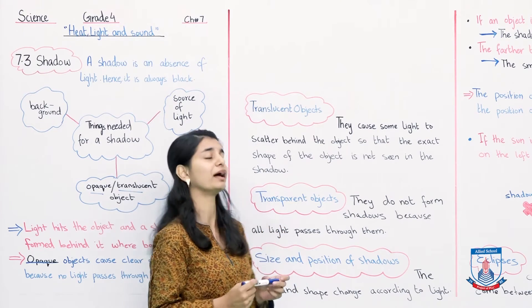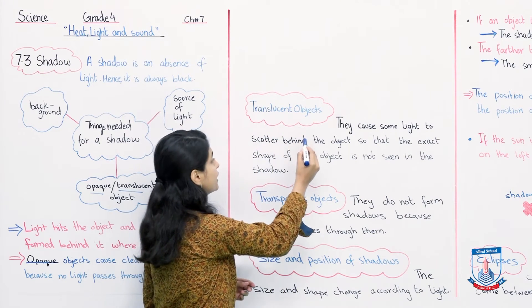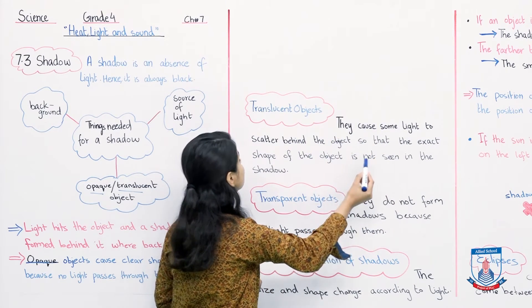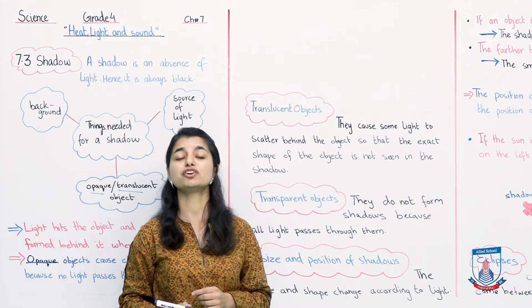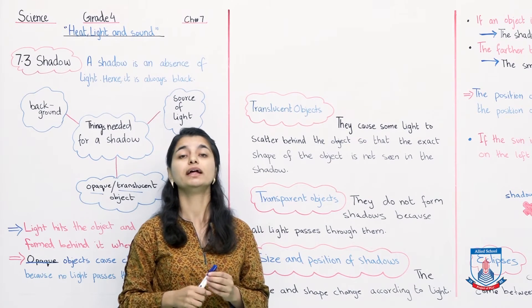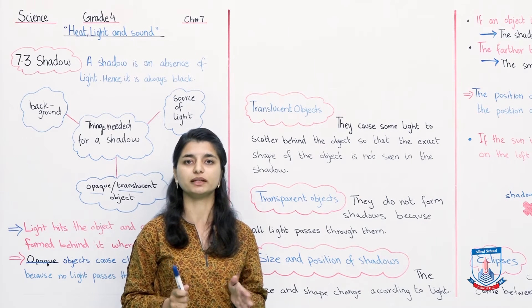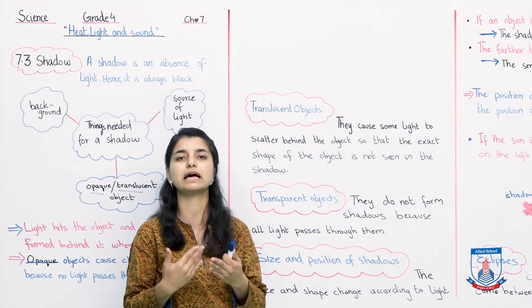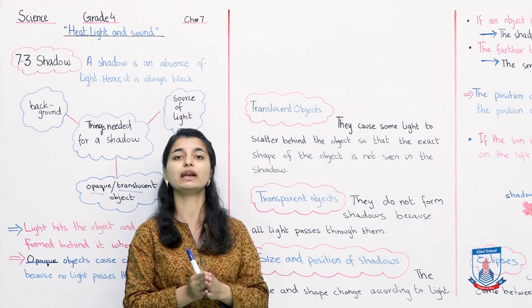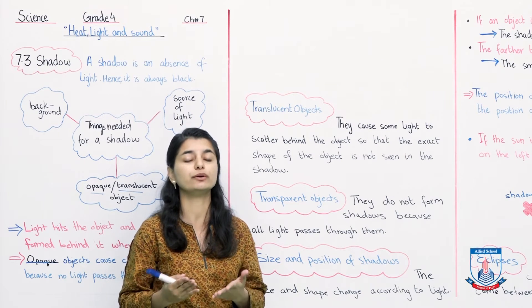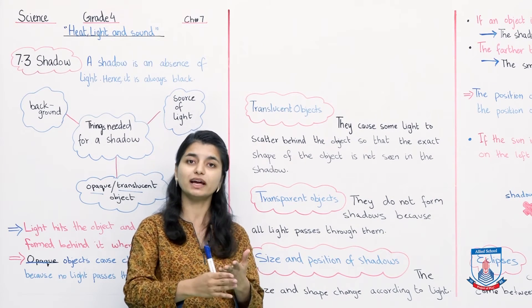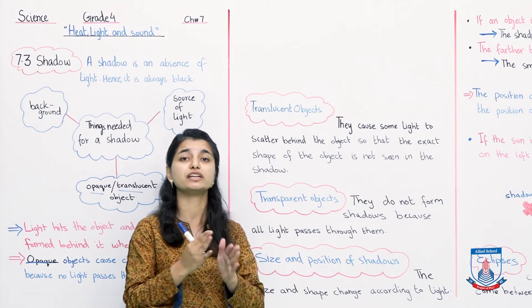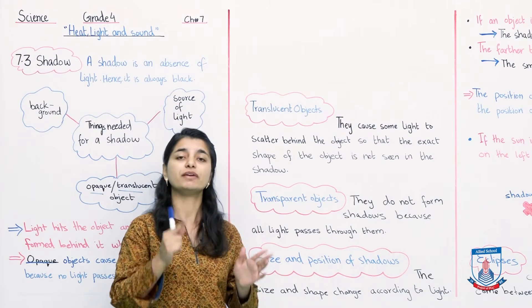Let's talk about translucent materials. Translucent objects allow some light to pass through, so the exact shape of the object is not clearly seen in the shadow. An example of a translucent material is tracing paper. Because some light passes through them, they cannot produce a clear shadow. Behind them there is a shadow, but its shape is not exactly the same as the object — wherever light is getting through, the shadow shape becomes blurred.